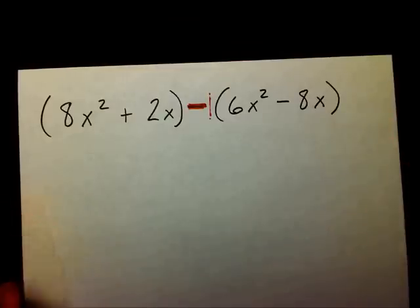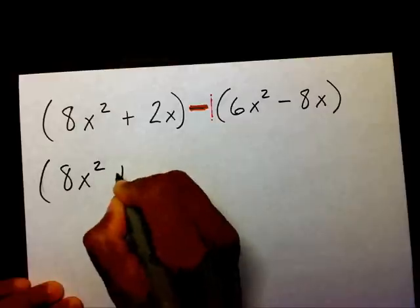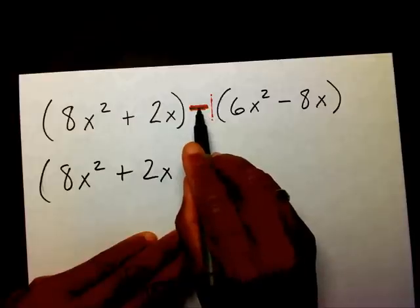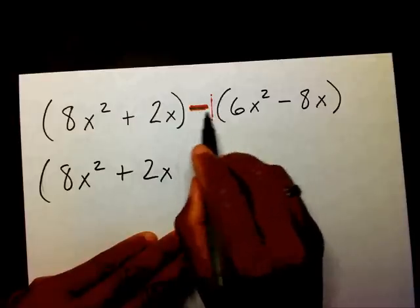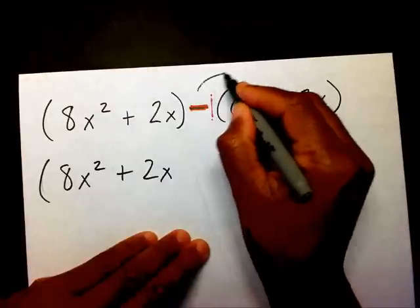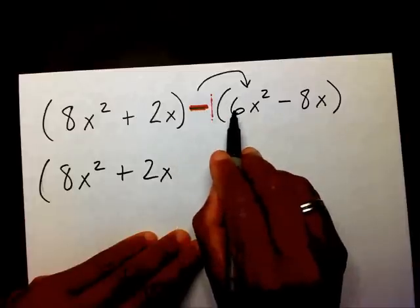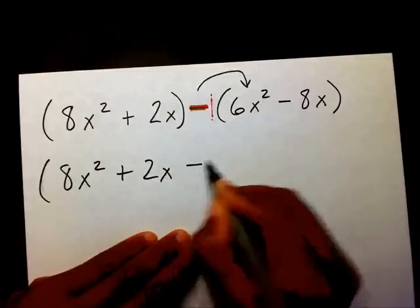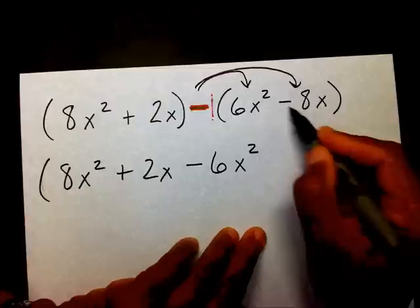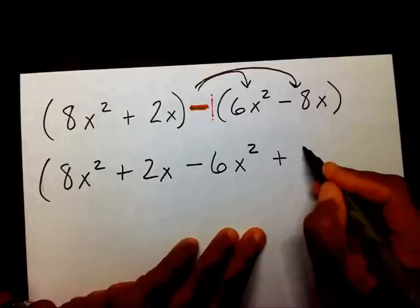So I'm going to write the first part, which is 8x squared plus 2x. Then I'm going to distribute or multiply this negative 1 to each term inside. So I'm going to take this negative 1 and multiply it times 6x squared. When I multiply negative 1 times 6x squared, I end up with a negative 6x squared. Then I'm going to multiply this negative 1 times this negative 8x — negative 1 times negative 8x is a positive 8x.